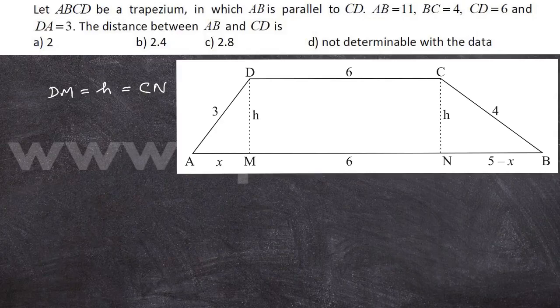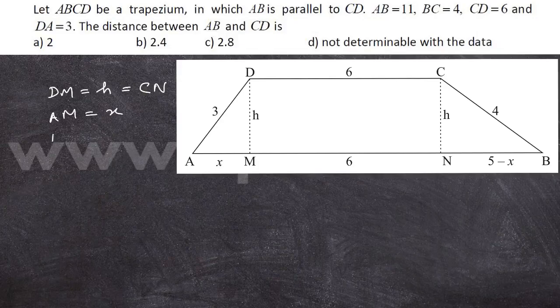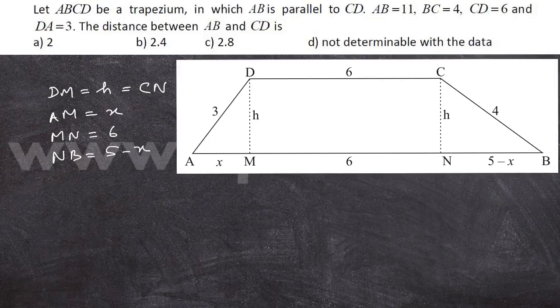Now, if I assume that AM is equal to x, I have MN is equal to 6, so that NB is equal to 5 minus x because the total length of AB is given as 11.